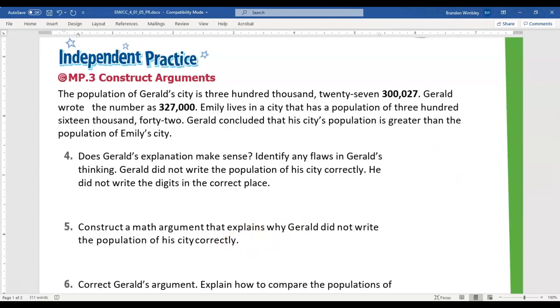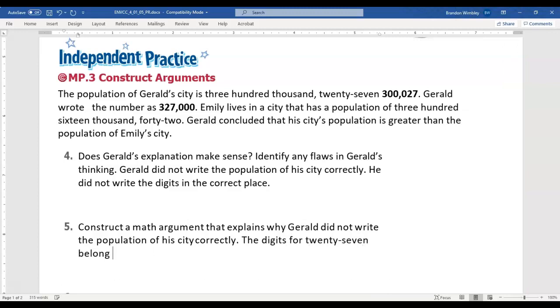Alright. So for number five, it says, construct a math argument that explains why Gerald did not write the population correctly. So why did he write it incorrectly? It's because the digits for 27, with that hyphen, belong in the ones period. Gerald should have written what we had to start with that we modeled: 300,027.